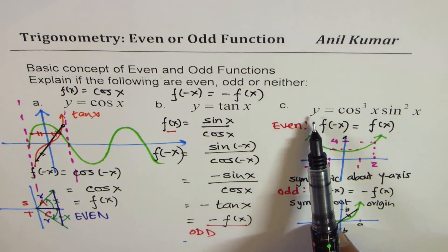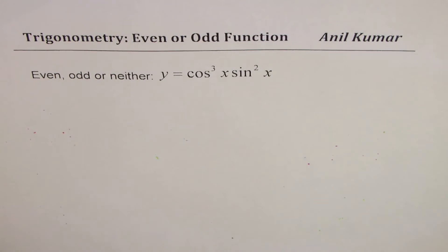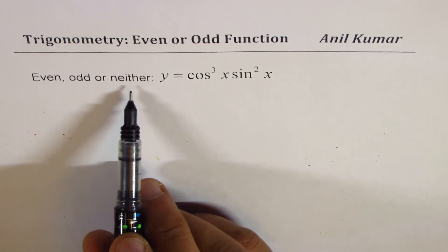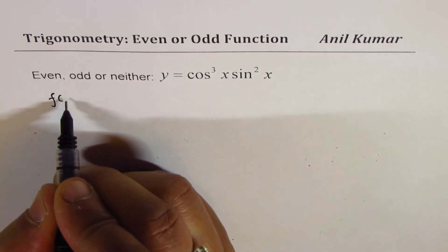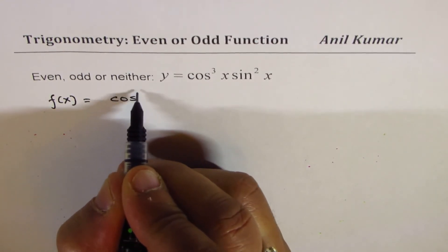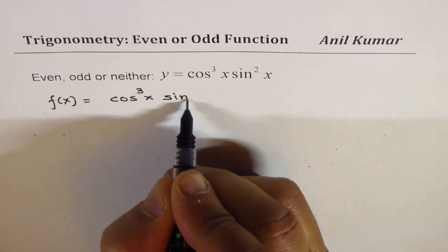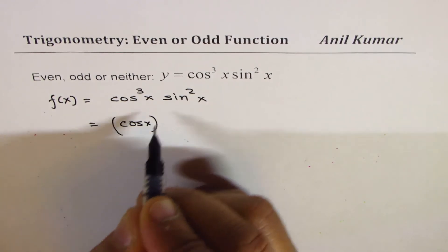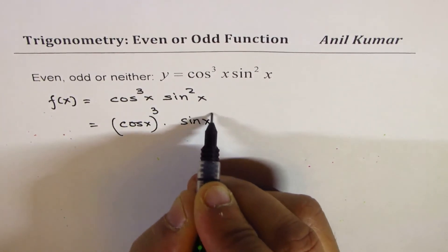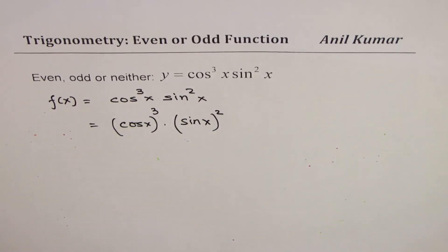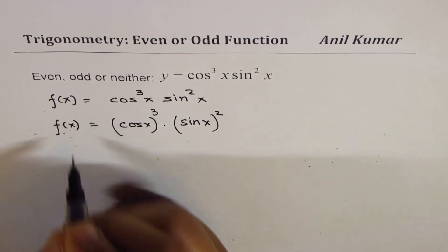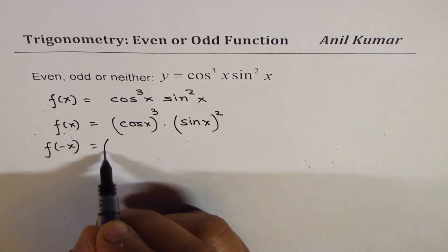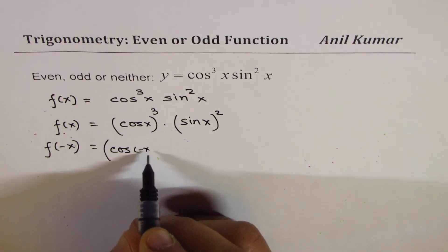Now let's take up the final question: y = cos³x · sin²x. We need to check whether it is even, odd, or neither. We can write f(x) = (cos x)³ · (sin x)². I prefer writing it this way as it makes things much simpler. Now I'll find f(-x) by replacing x with -x.